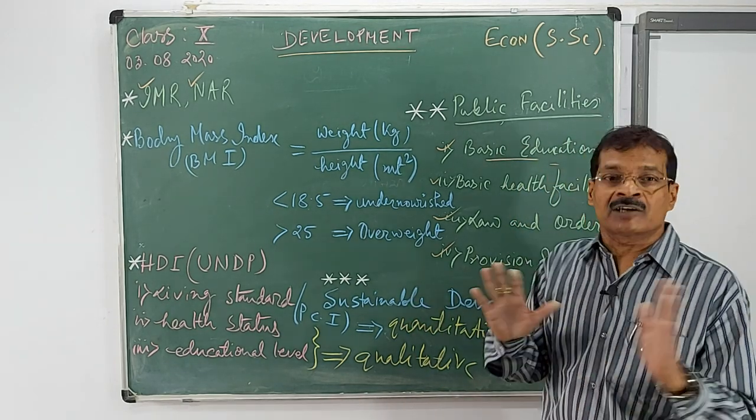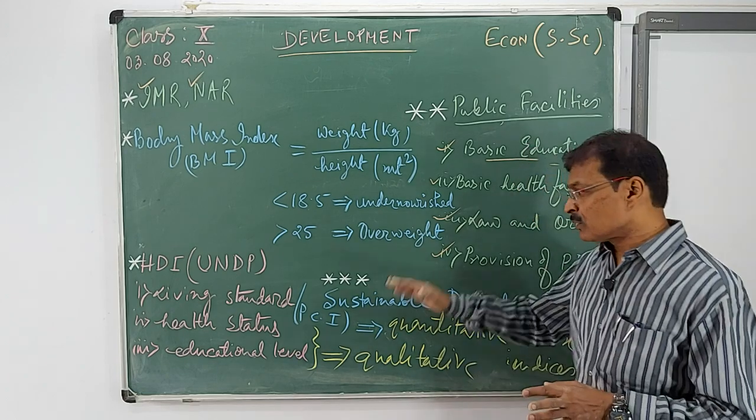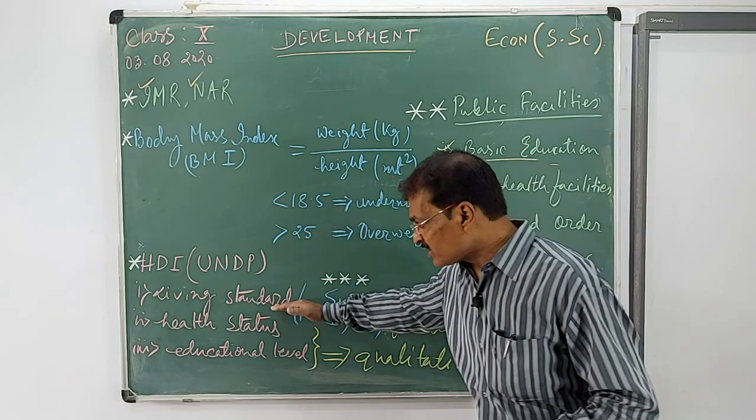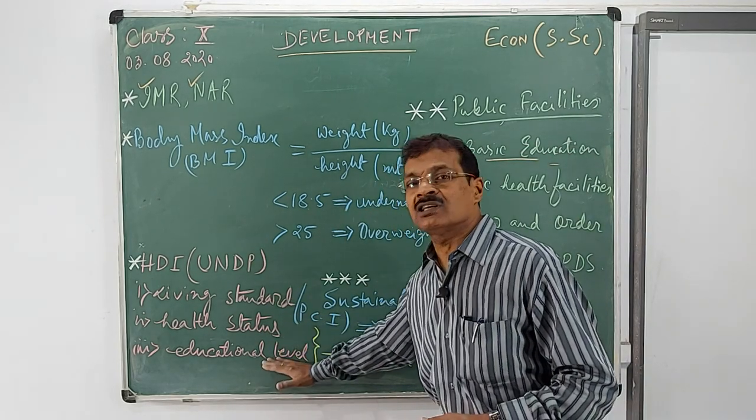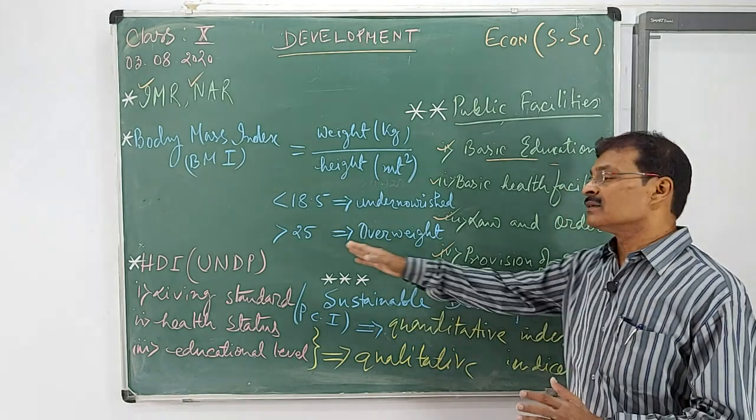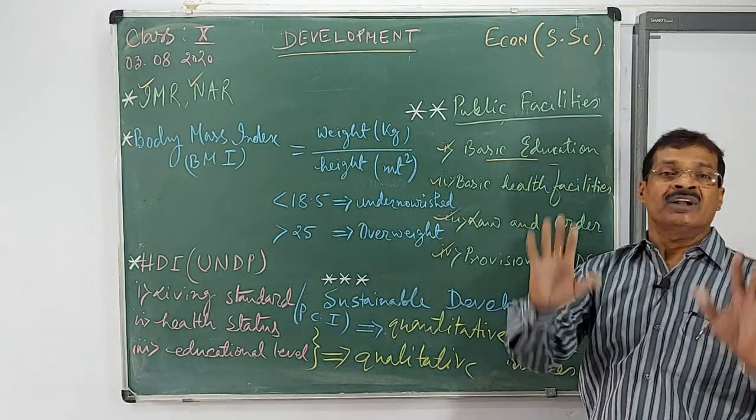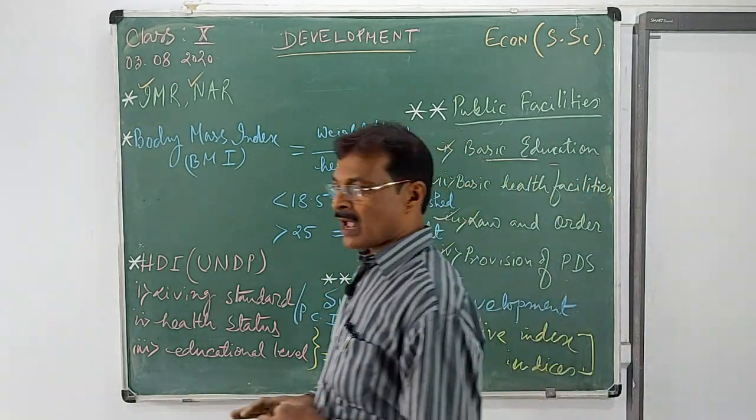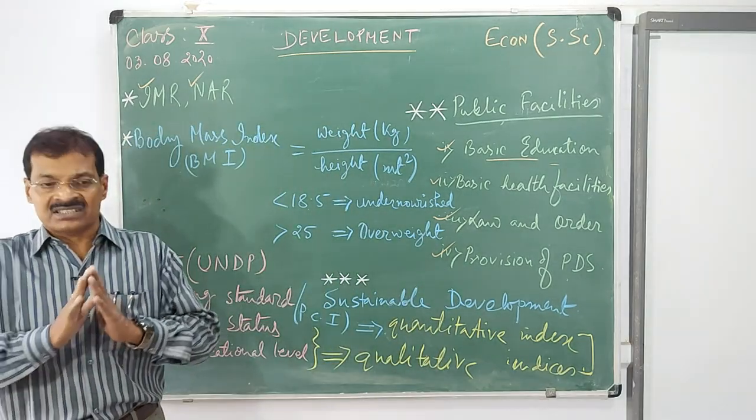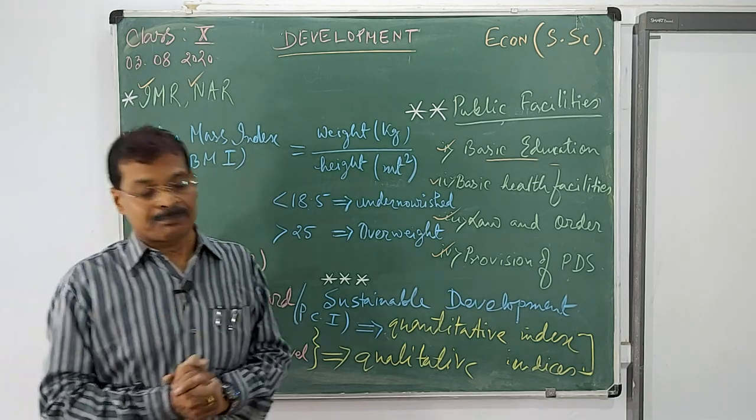So that cannot be considered as development because development once again comprises of three things: living standard, health status, educational level. These two are the qualitative aspects, this is the quantitative aspects. And now we are going to the end of this chapter, that is the sustainable development.